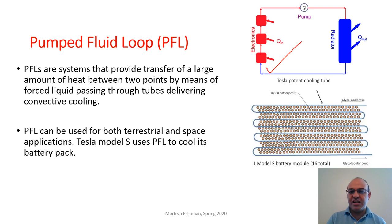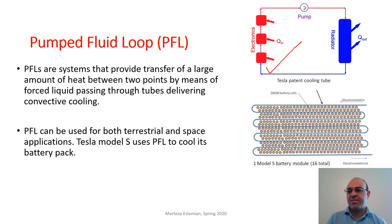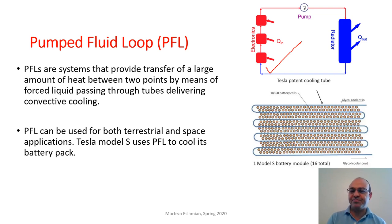A fluid that does not freeze at space conditions — such as methanol or ethanol — is flowed through the circuit. It picks up heat from the electronics, and a pump overcomes the pressure drop in the system. If the temperature is high and heat must be rejected, the fluid goes through the radiator, where it rejects heat to space, and then the cycle continues.